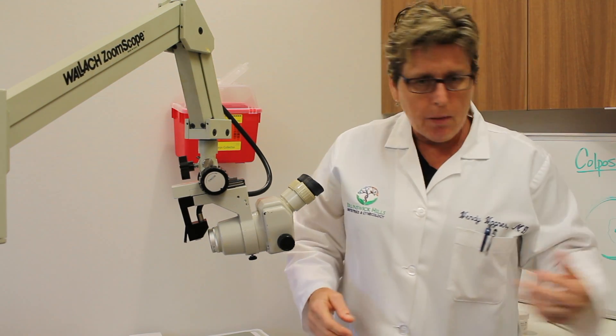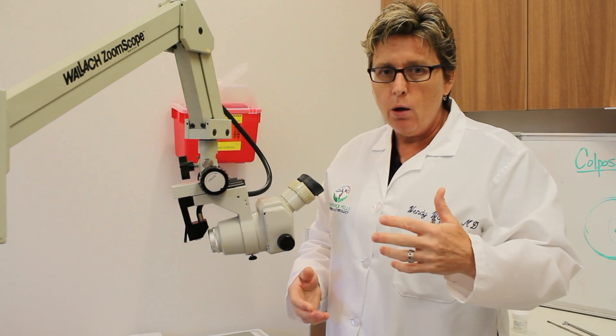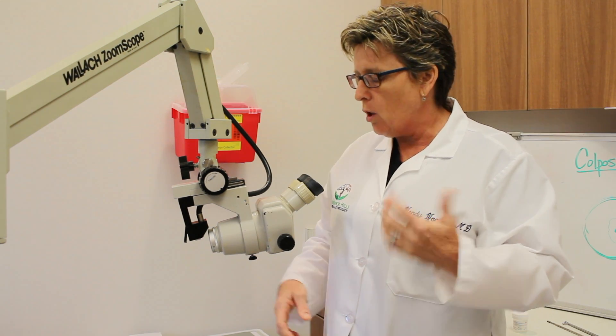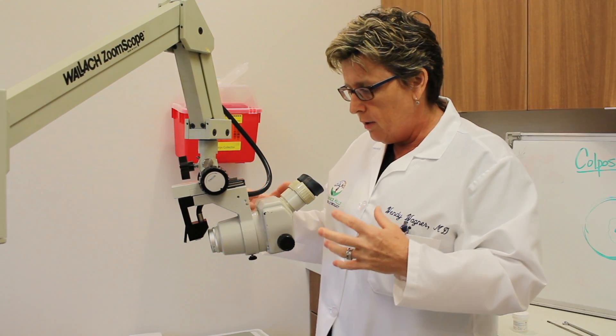What happens is the abnormal parts of the abnormal cells or the abnormal areas turn what we call acetyl white, which is white, and we can see that.